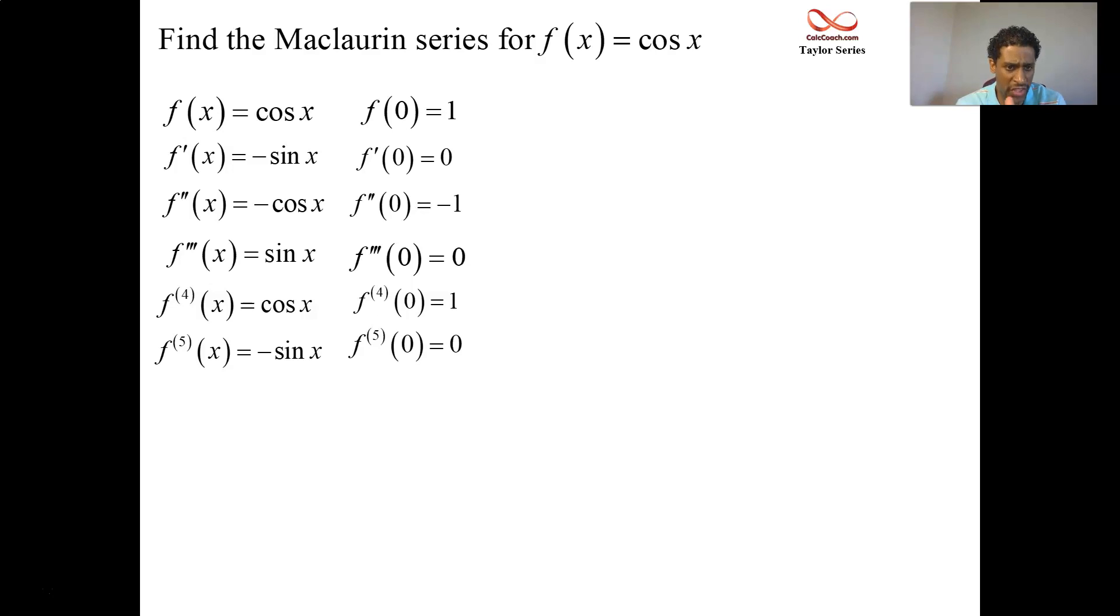Now, this isn't the coefficient. Remember, the coefficient, this is actually the numerator of the coefficients. Each coefficient has a denominator where you divide by n factorial. So that's the third column. We're going to divide each of these by n factorial. Remember, 0 factorial is defined to be 1. So 1 divided by 1 is 1, and then we have a 0. Negative 1 over 2 factorial, then a 0. 1 over 4 factorial, and then a 0. So we're getting the even factorials in the denominator, and we're alternating between 1 and minus 1.